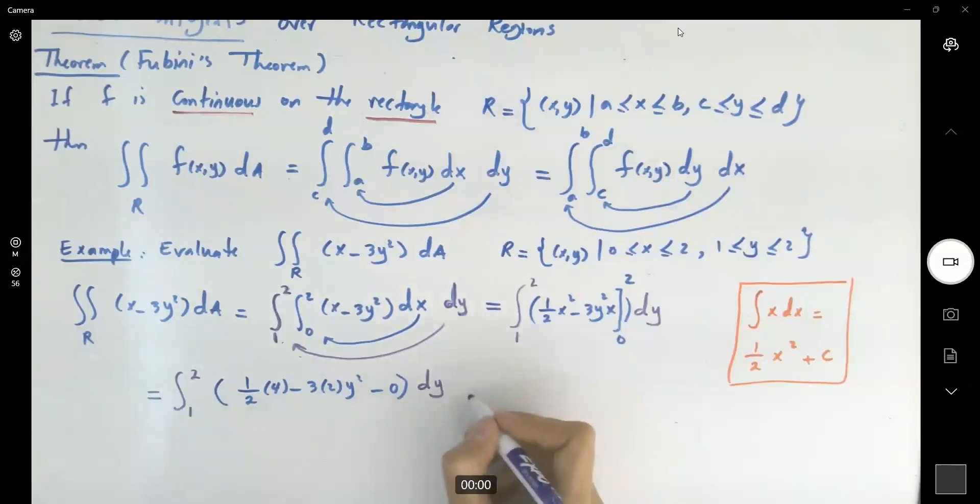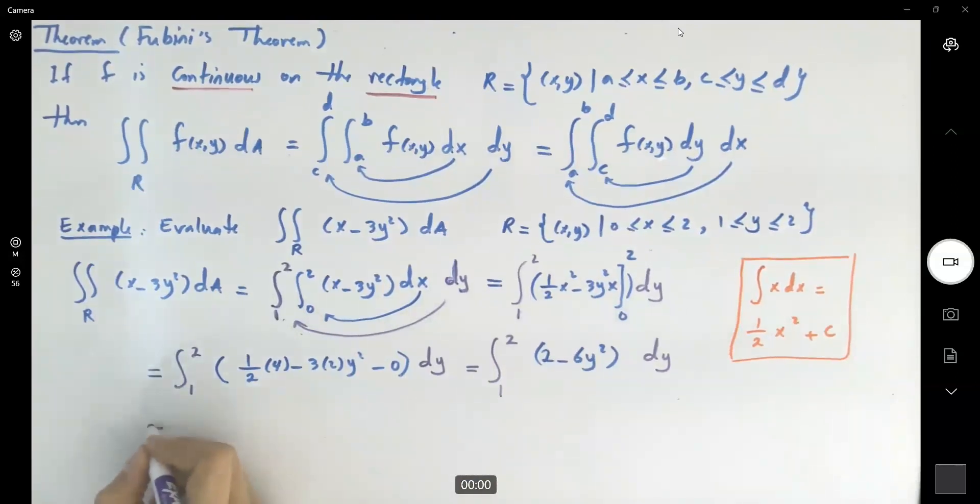This is equal to integral 1 to 2 of dy of 2 - 6y². Now, we are taking the integral with respect to y. This becomes the integral of 2 dy is 2y minus 6 divided by 3y³, where y ranges between 1 to 2. Okay. Simple integral.